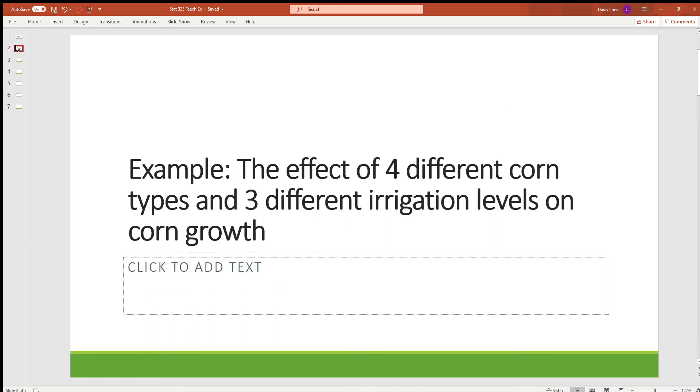So the experiment that we'll be talking about today is the effect of four different corn types and three different irrigation levels and how that affects corn growth.